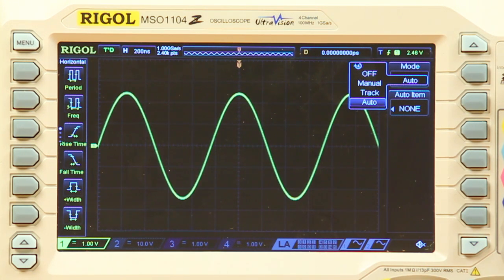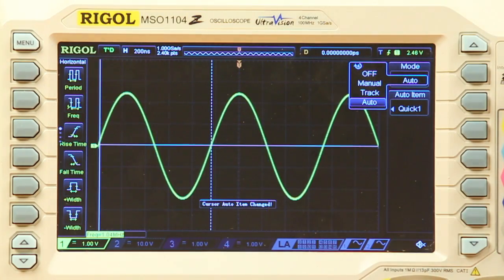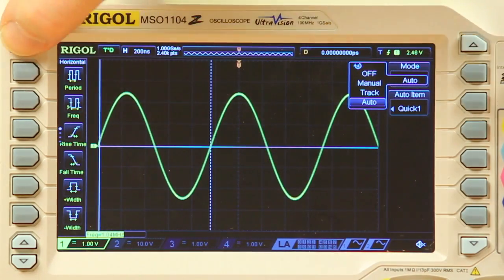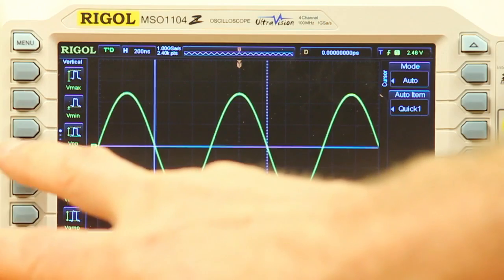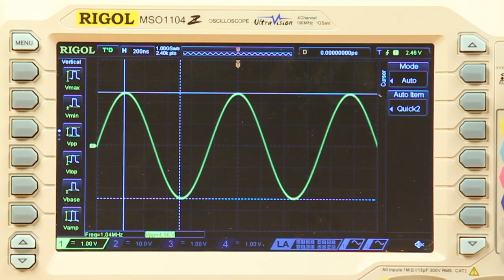For this example, let's choose frequency and peak to peak. Now, the cursors appear on the screen and show positions used for the measurement.